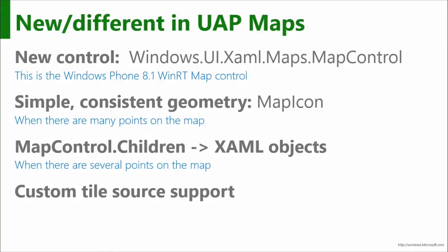This particular control is very well documented because it is the Phone 8.1 WinRT map control. So you can go look it up on MSDN and find out. It's a very rich control. You can overlay — you can draw stuff onto the surface yourself with map icon objects, which you can put a graphic on and then position it using a latitude and longitude on your map.